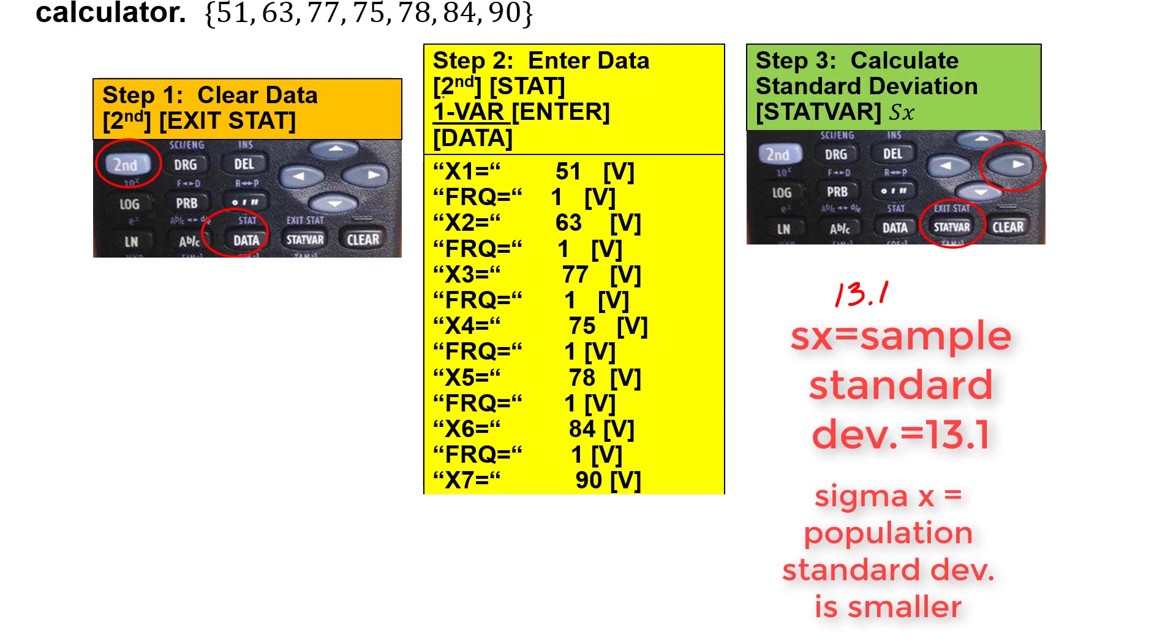Because you're dividing by a bigger number n instead of n minus one and the reason you're able to do that is we're more confident about where the data is positioned because we know all the information. When we do sample we leave it bigger because we're not sure, we're okay it could be between here and here we're not really sure. So it has to do with our confidence level.